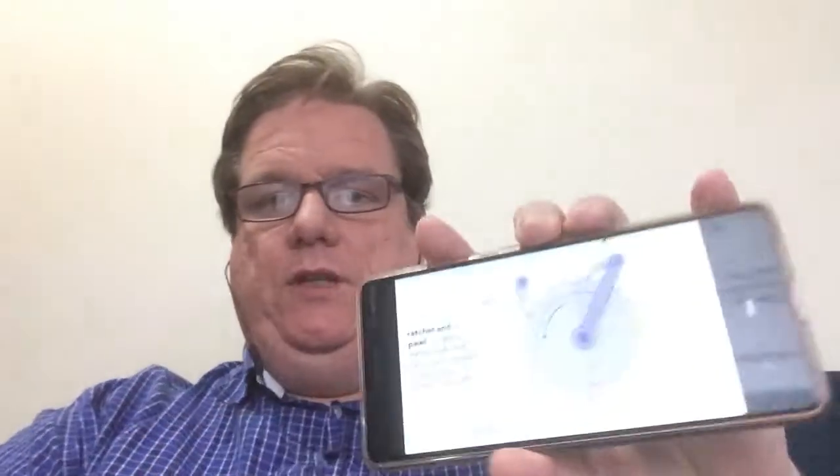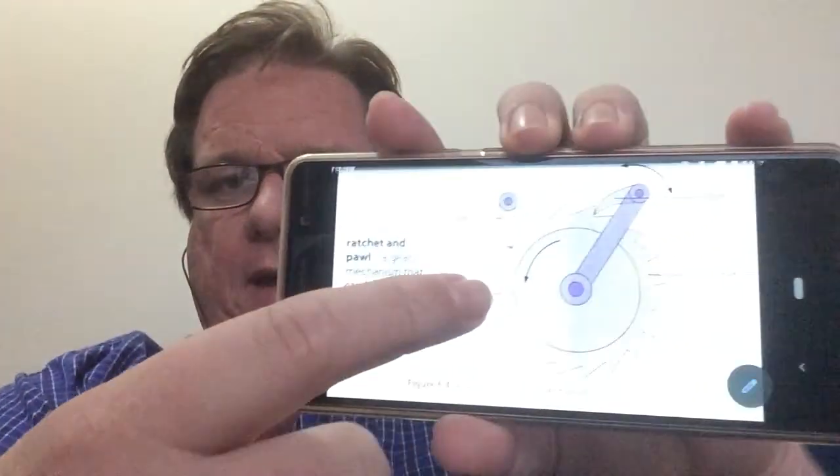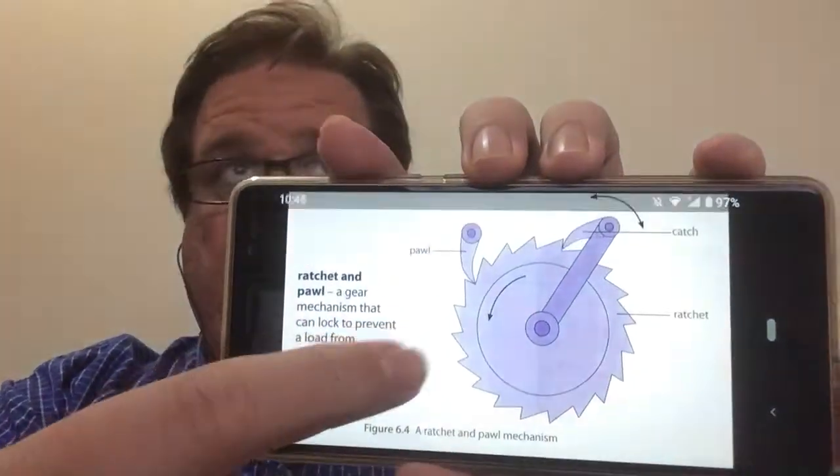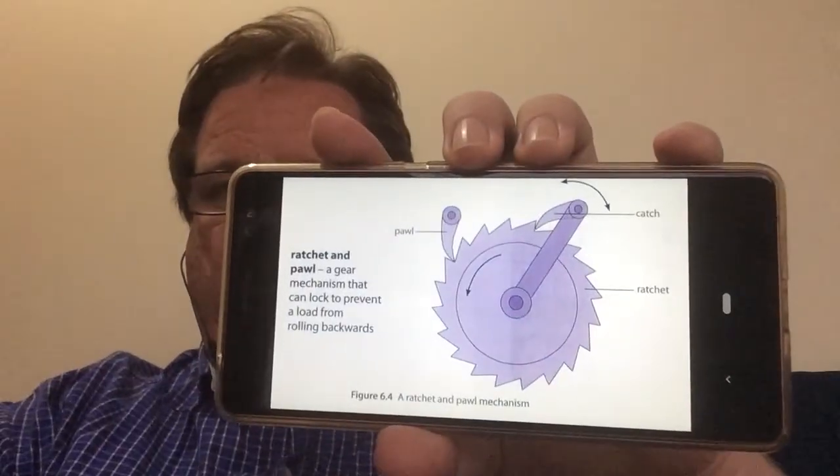Alright, welcome back guys. We're going to talk about mechanical control systems. So the first example that I have of a mechanical control system is something called a ratchet and paw.